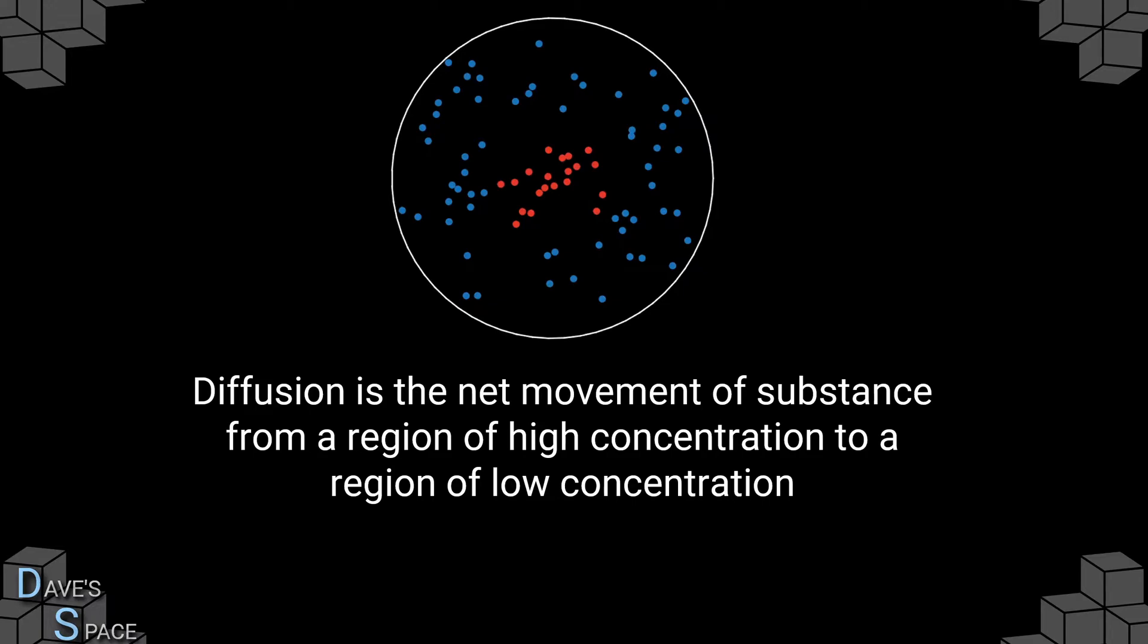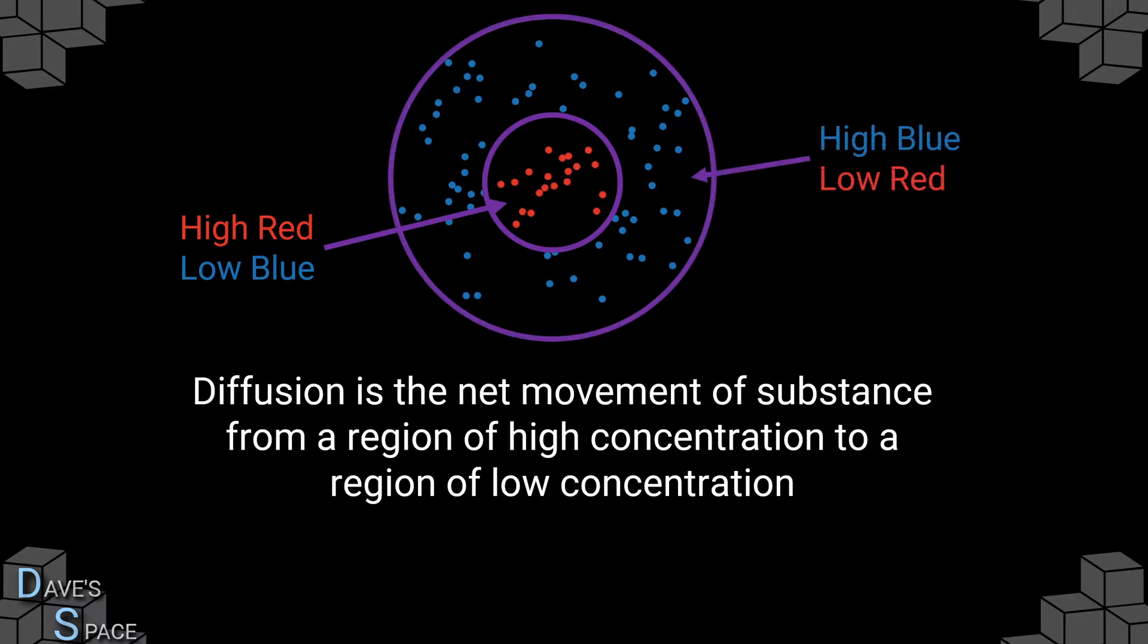In the movie above, we have elastically interacting particles in a circular container, which behave like an ideal gas. The central region has a high concentration of the red-coloured particles and a low concentration of the blue-coloured particles. The outer region has a high concentration of blue particles and a low concentration of red particles. You'll notice there is nothing between the two regions. It's simply that one contains more red and one contains more blue particles.